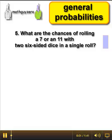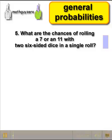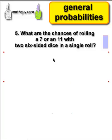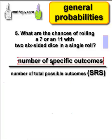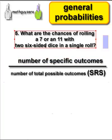The number of specific outcomes divided by the total possible outcomes — that's how all of these general probabilities work. So how many different ways can you make a 7? That's a good question. Let's go ahead and see.